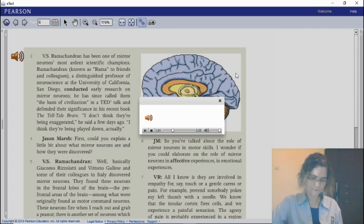Well, basically, Giacomo Rizzolatti and Vittorio Gallese and some of their colleagues in Italy discovered mirror neurons. They found these neurons in the frontal lobes of the brain, the prefrontal areas of the brain, among what were originally found as motor command neurons. These neurons fire when I reach out and grab a peanut. There is another set of neurons which fire when I reach out and pull a lever, and other neurons when I'm pushing something or hitting something.